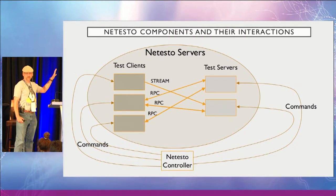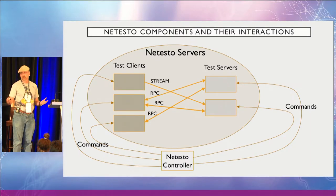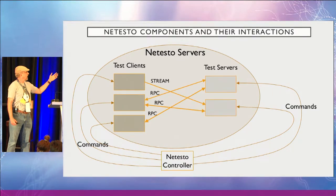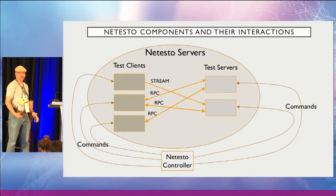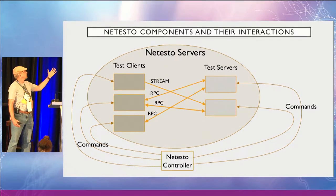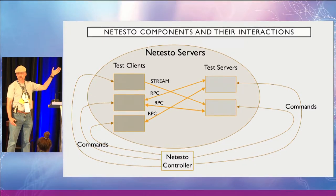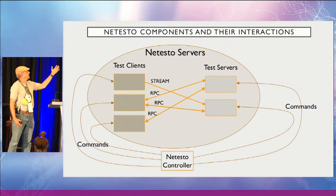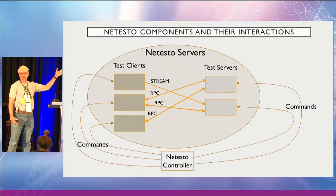So what does it look like to run under NetTesto? You have a set of NetTesto servers running the NetTesto service — a daemon — that will accept connections from the NetTesto controller. A host can be both the controller and a server at the same time. In a particular test, a subset of servers will be clients and others will be test servers, meaning the client initializes connections to the test servers. The same host can be both a test client and a test server.